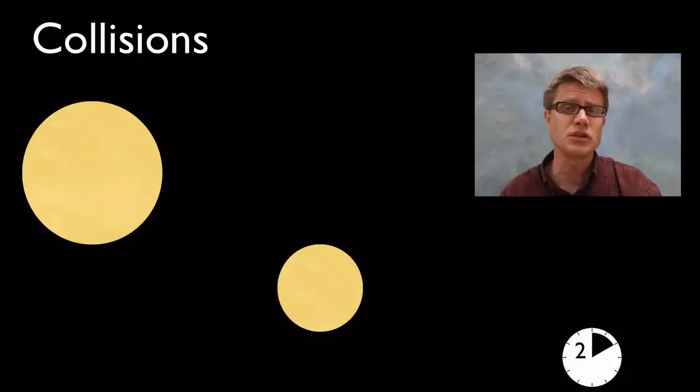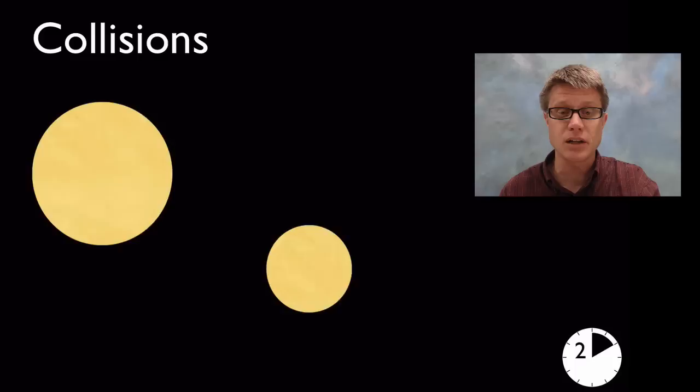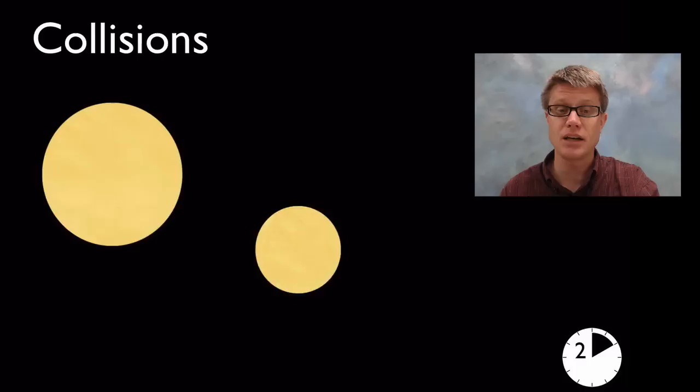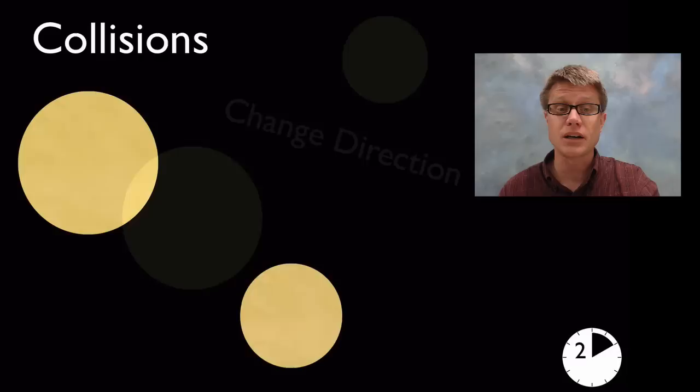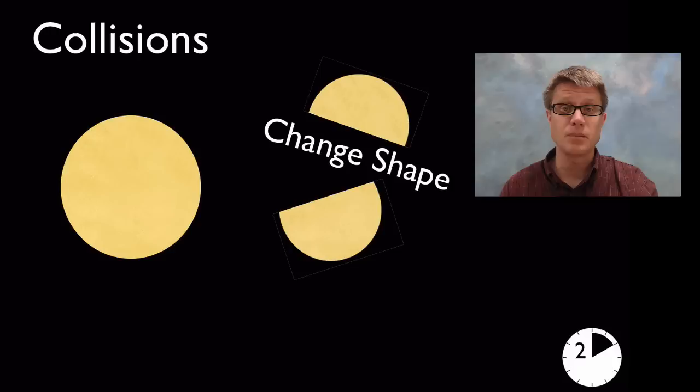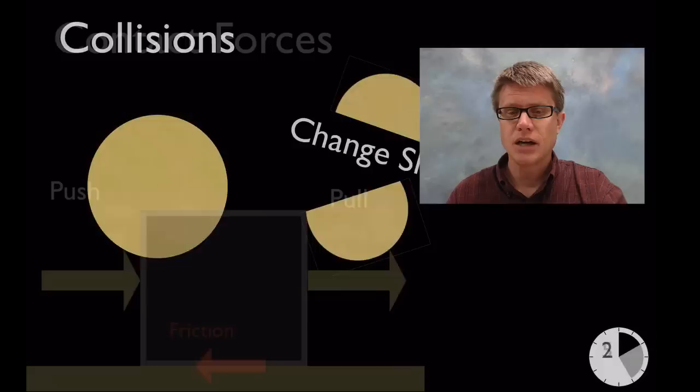How do you teach this? In elementary school — kindergarten and first grade — start with collisions between objects. When two objects collide and touch, what happens? It can change the direction of those objects, or it could change their shape — the actual makeup of those objects. That's where you want to start: collisions.